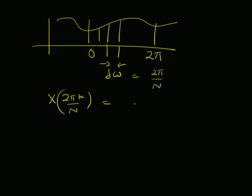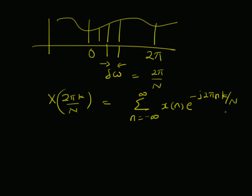The sampled signal X(2πk/N) is obviously defined as the summation from n = −∞ to +∞ of x(n) e^(−j2πnk/N). This is the definition of the sampled version of the DTFT.